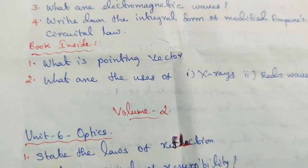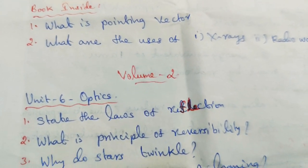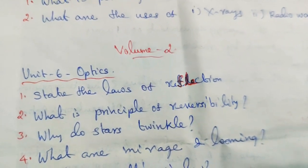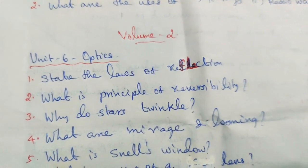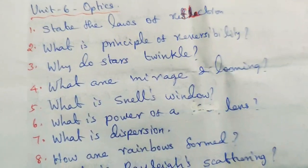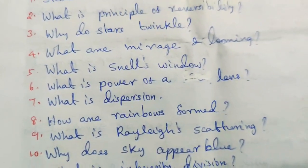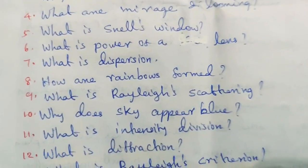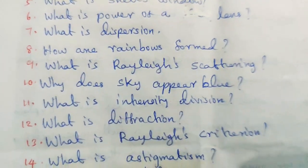Volume 2, Unit 6: Optics. State the laws of reflection. What is the principle of reversibility? Why do stars twinkle? What are mirage and looming? What is Snell's window? What is the power of a lens? What is dispersion? How are rainbows formed? What is Rayleigh scattering? Why does the sky appear blue? What is intensity division?